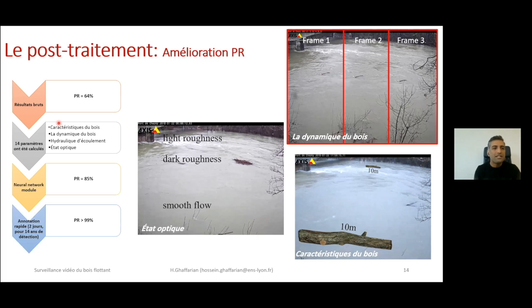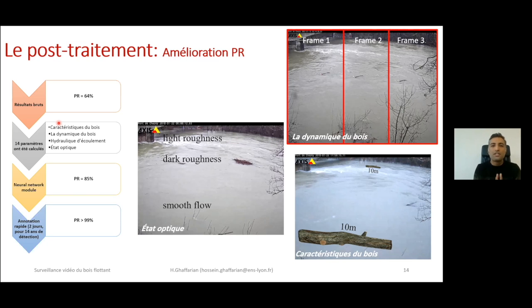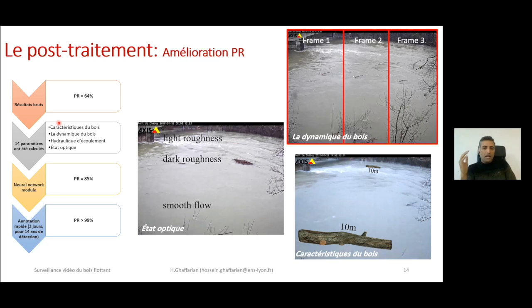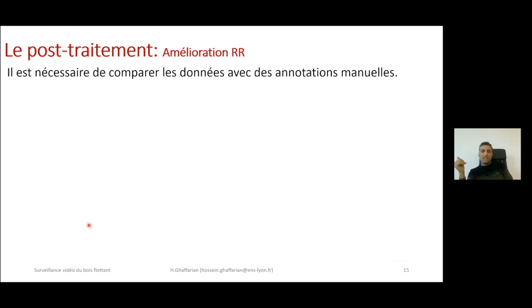With only a small amount of additional annotation — using our 14 years of data on the Ain river, I annotated some data manually over just two days — I was able to increase precision to 99%, by focusing annotation on the cases most likely to be ambiguous. After this step, we have very good precision, and the next step is to increase the recall rate as well.